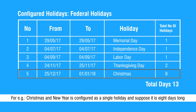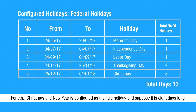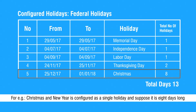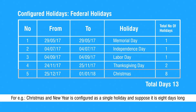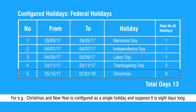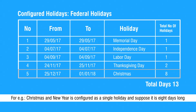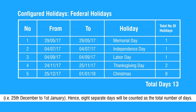Total number of days shows the sum of days configured as holidays in a selected schedule. For example, Christmas and New Year is configured as a single holiday and suppose it is 8 days long — that is 25th December to 1st January. Hence, 8 separate days will be counted as the total number of days.